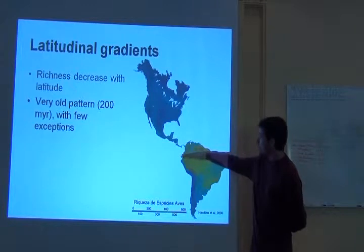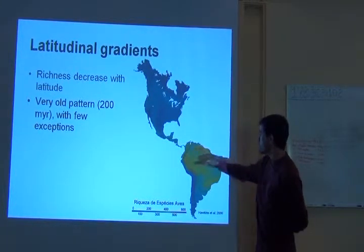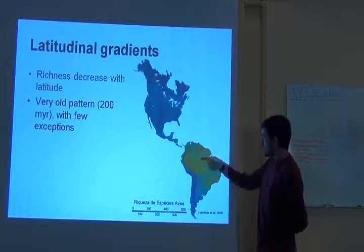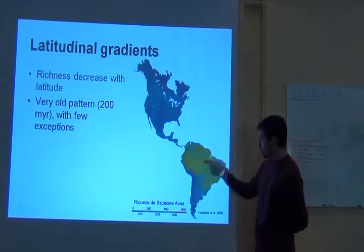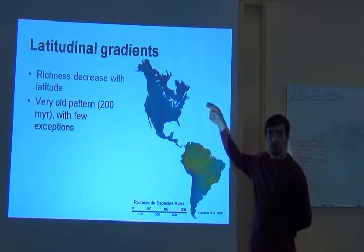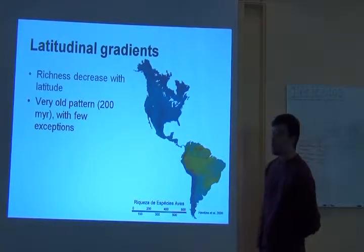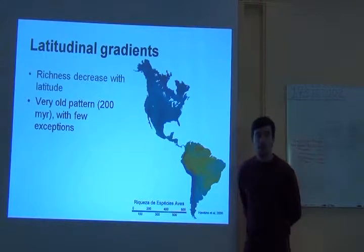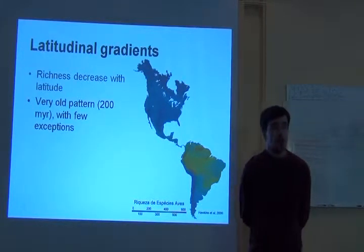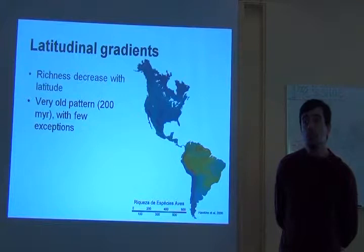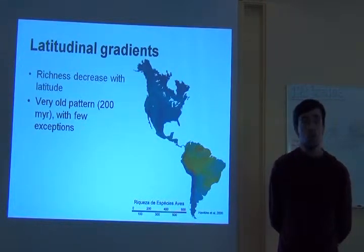The equator is around here, and you will see a decrease in species richness towards higher latitudes. Of course, you cannot simplify this pattern by saying there's only a decrease or an increase going northwards or southwards.